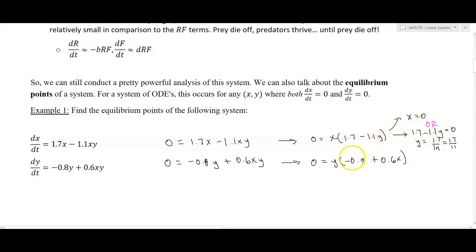The second equation, if I solve that one for x and y, I'll have either y equals zero, because zero times anything gives zero. Or if that second factor, negative 0.8 plus 0.6x equals zero, that will give me x equals 0.8 divided by 0.6, which comes out to exactly 8/6.